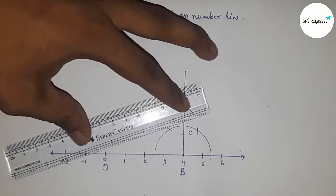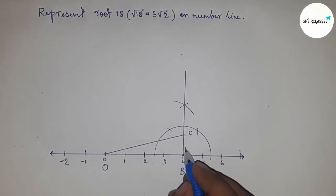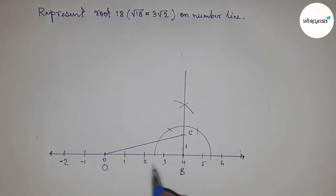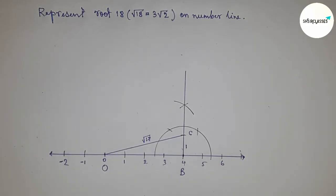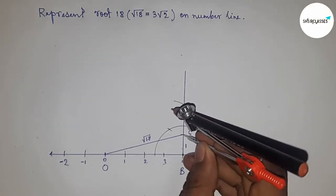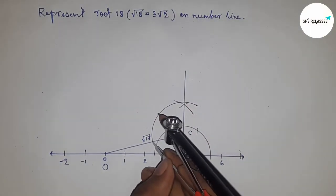This is point C and joining O and C. This is one unit length, so from this right angle triangle, this is √17. Next, we have to construct a perpendicular line on point C.